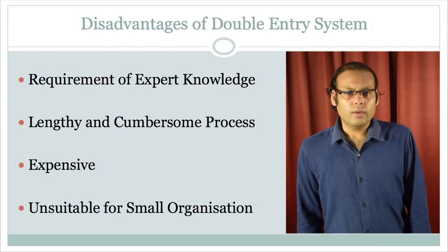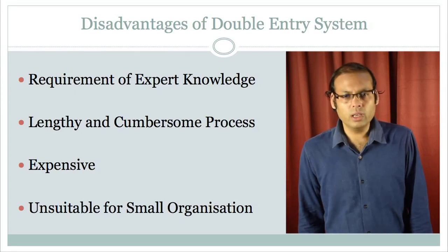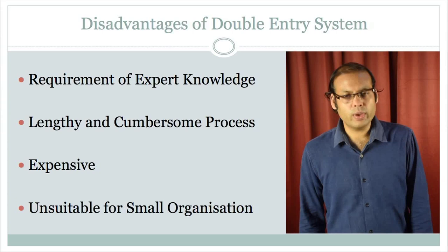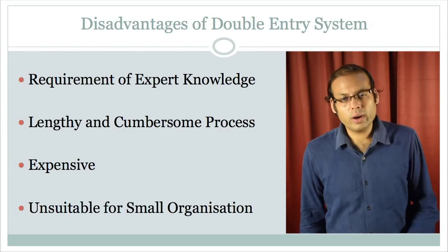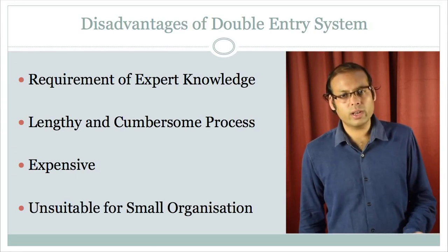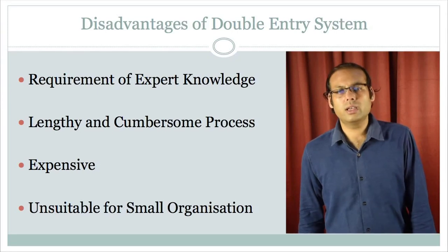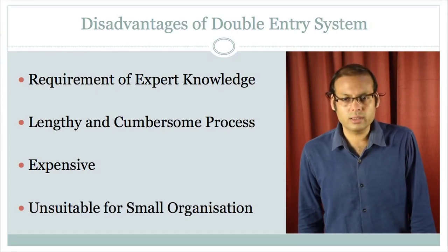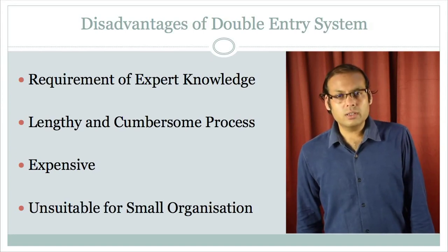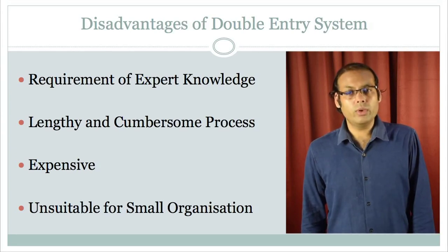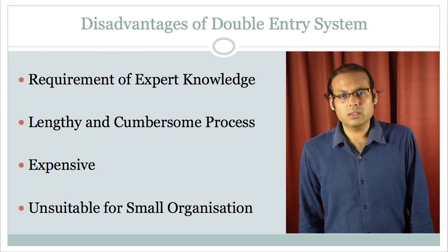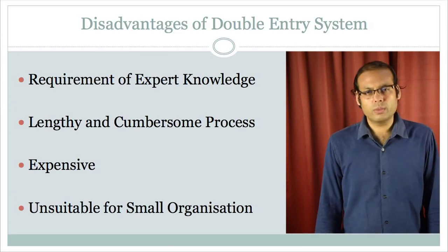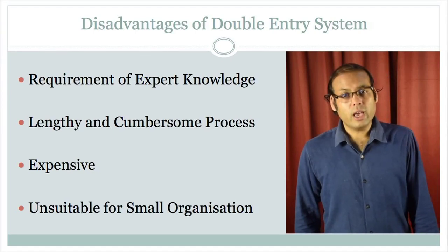However, there are certain disadvantages also. Number one, requirement of expert knowledge — for recording transactions under this system we must know the various aspects of it. Then, it is lengthy and cumbersome: we first record a transaction in the journal book, then post it to the ledger book, then prepare a trial balance, then final accounts. It is expensive — we need various books of accounts and may need to appoint an accountant. It is generally termed as unsuitable for small organizations where transactions are very few. In spite of these disadvantages, this system provides efficiency in the whole accounting system and you can readily ascertain the results of your business.